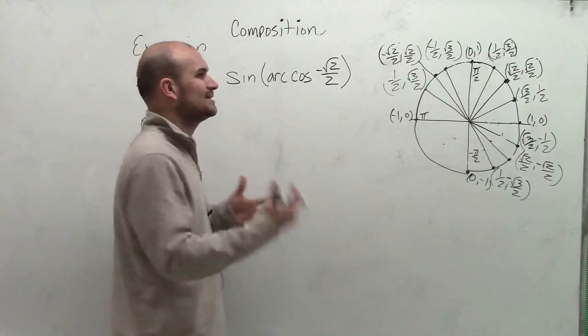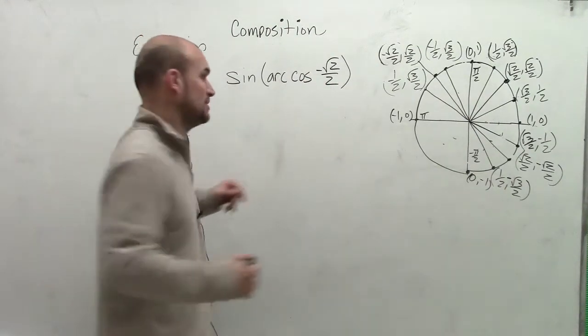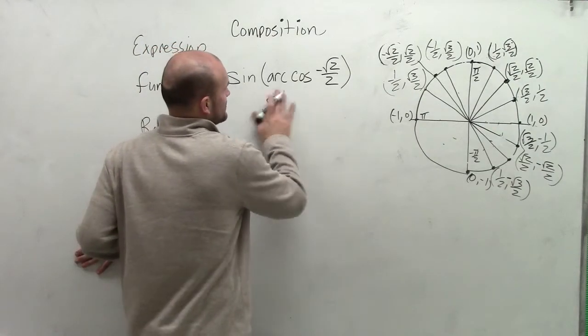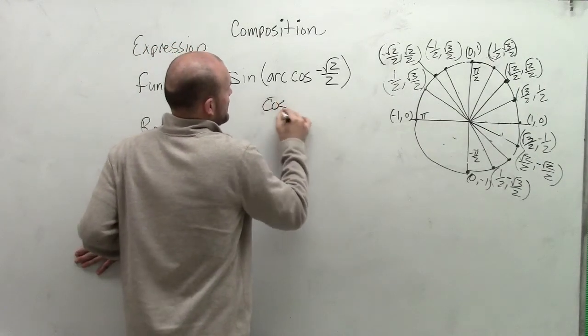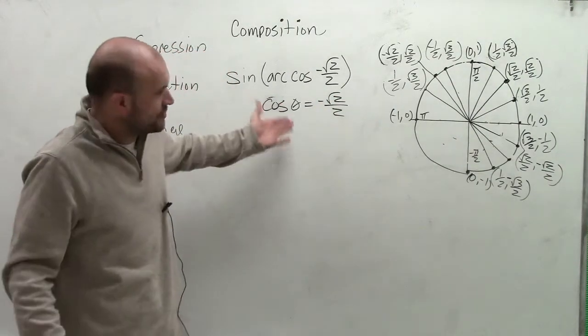And remember, what that really says is what angle, when I take the cosine of it, is going to give me negative square root of 2. I can write cosine of theta equals negative square root of 2 over 2. So what angle will produce that?